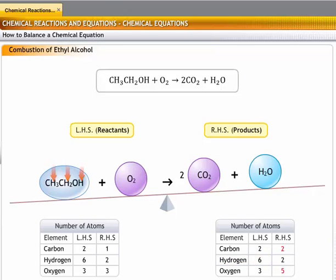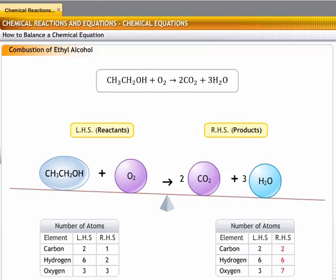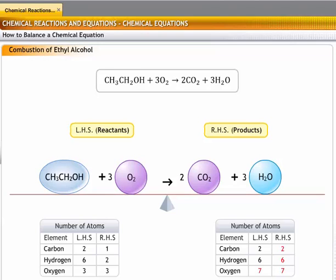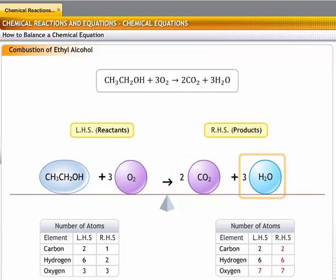Next, consider hydrogen: there are six atoms on the reactant side and two on the product side, so place the coefficient 3 before H₂O on the product side — hydrogen is now balanced. For oxygen: there are now seven oxygen atoms on the product side but only three on the reactant side, so place the coefficient 3 before oxygen on the left-hand side. After a final check, the balanced equation shows ethyl alcohol reacting with three molecules of oxygen to give two molecules of carbon dioxide and three molecules of water.